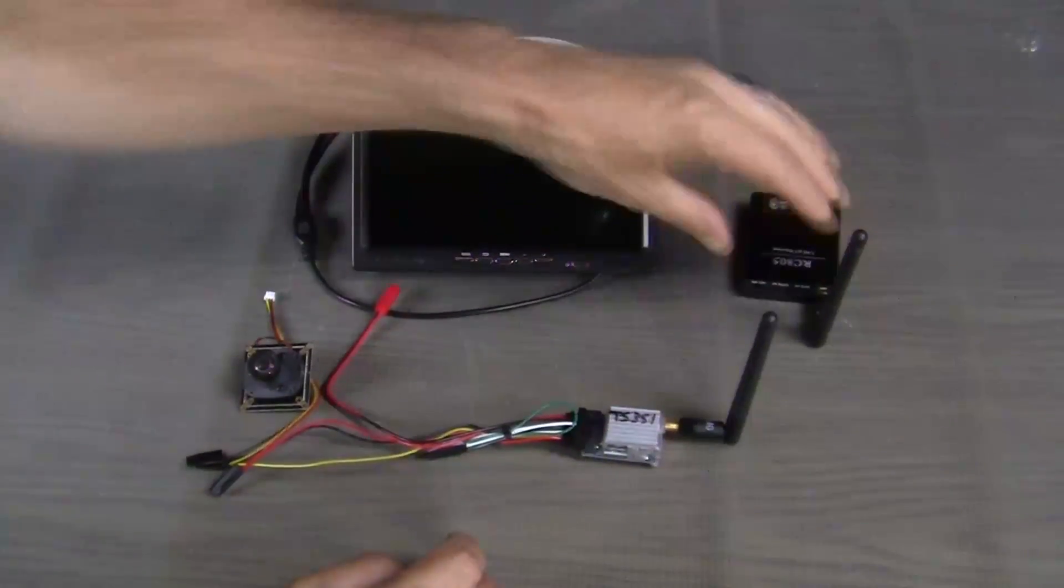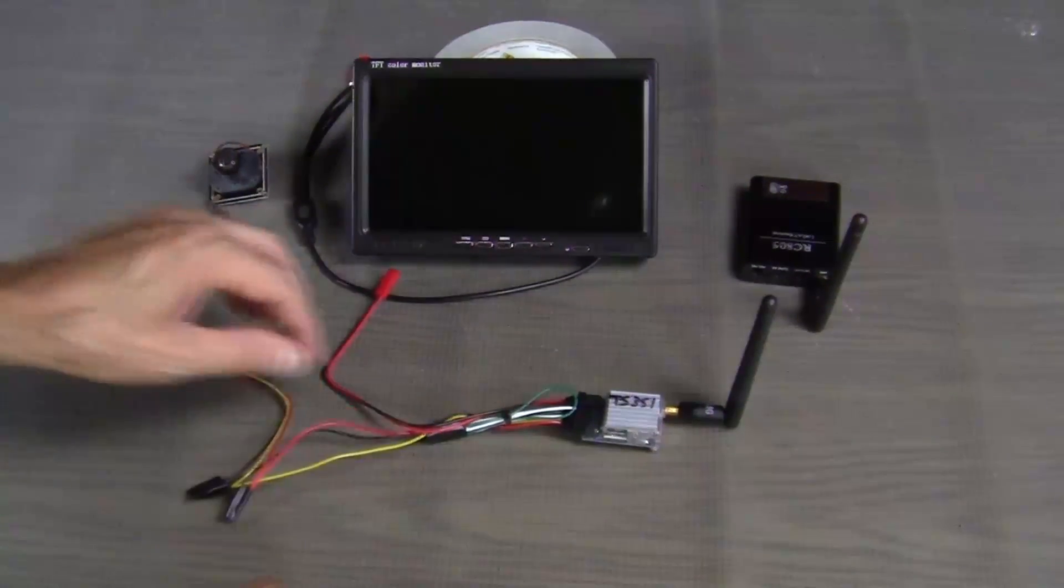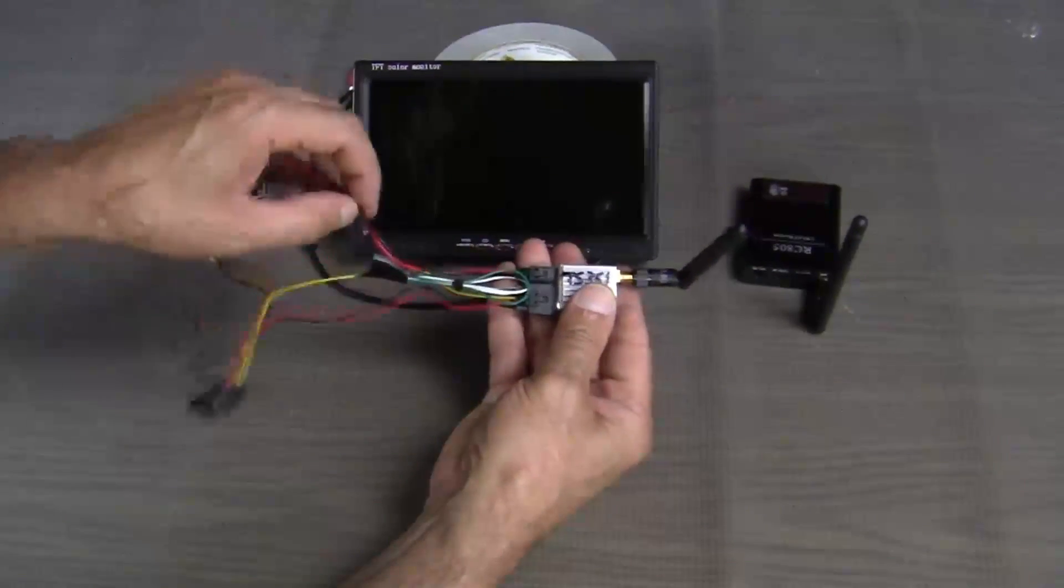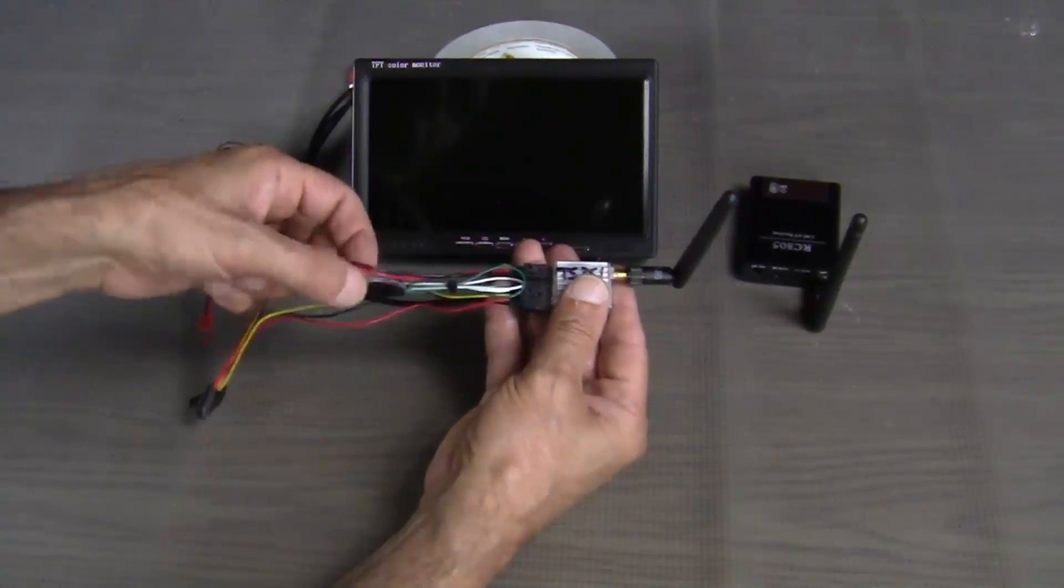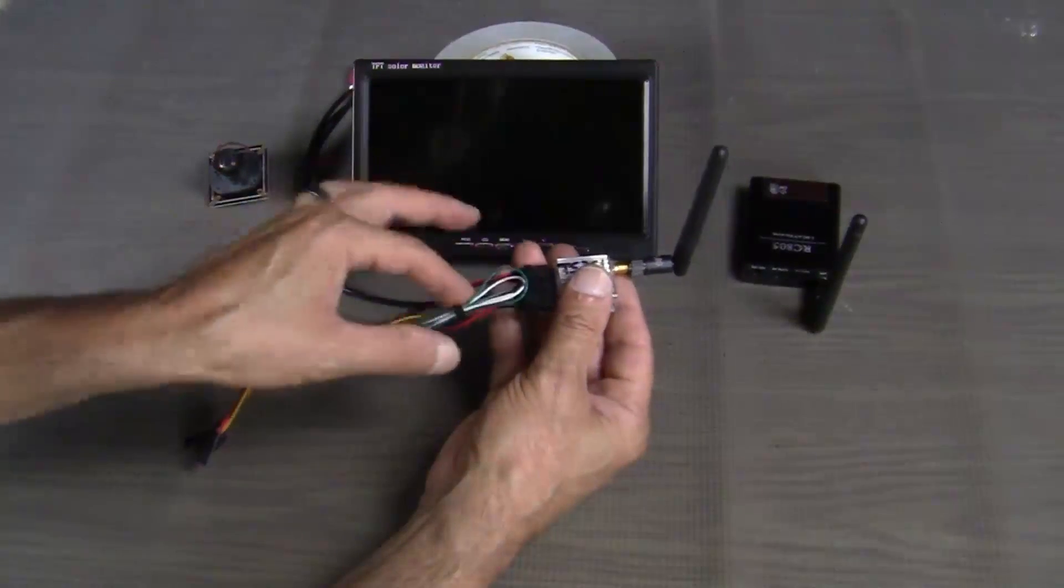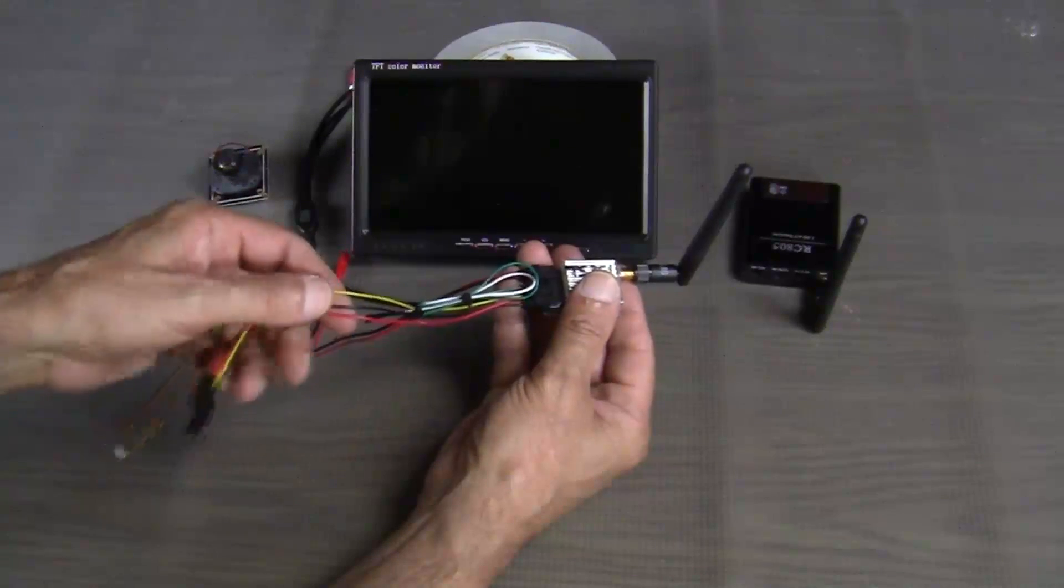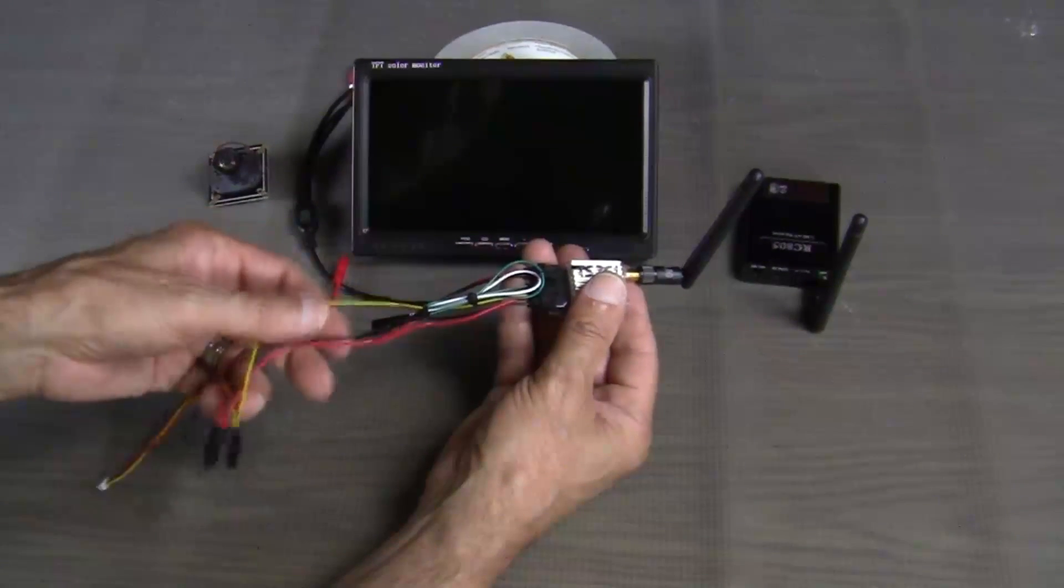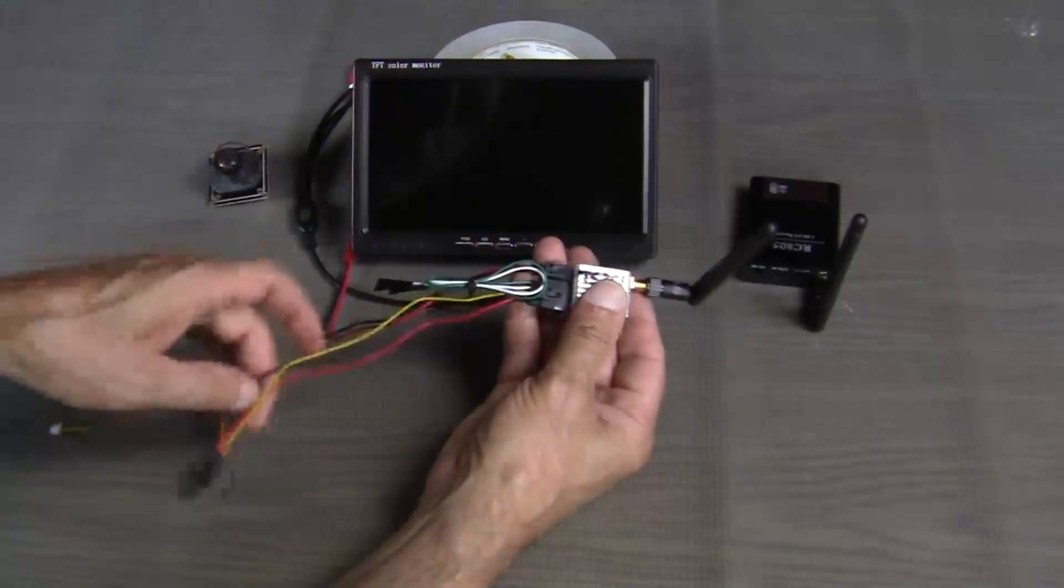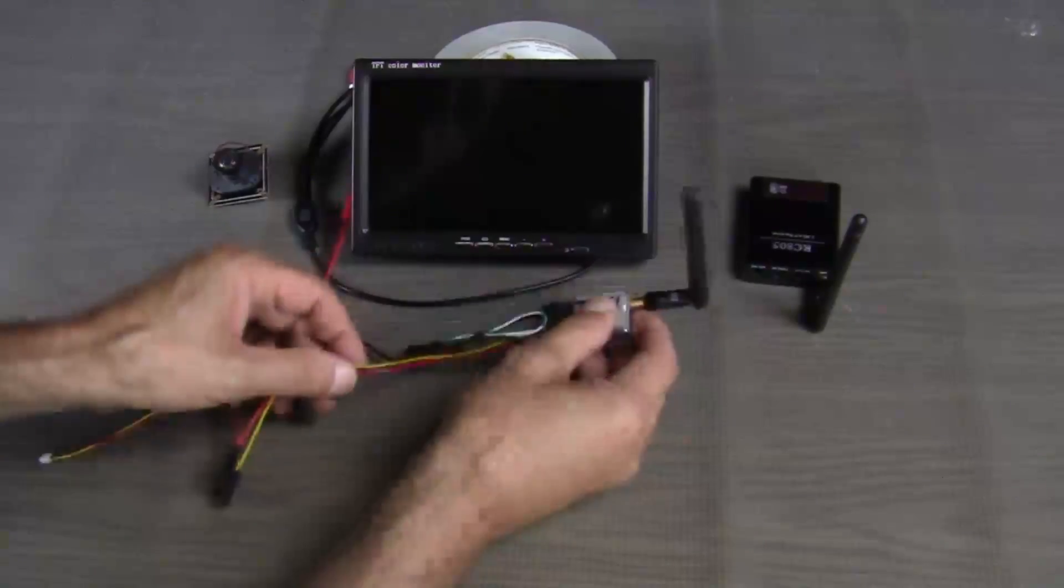So let's start with the transmitter. The transmitter comes with these two wire harnesses. Here's for your red and black being for your power, and then your camera connection being these five wires here. Now our particular camera only uses the black, yellow, and red wire.